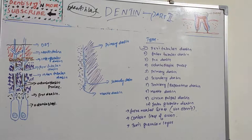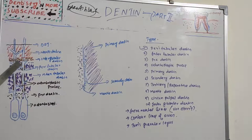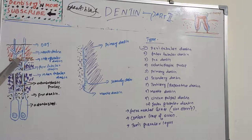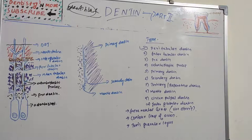Let's start with peritubular dentine — the dentine that immediately surrounds the dentinal tubules. In this picture, the brown color immediately surrounding the dentinal tubule is the peritubular dentine. Here we have the dentinal tubule, the odontoblast, and the odontoblastic processes, and the dentine which immediately surrounds the dentinal tubules.